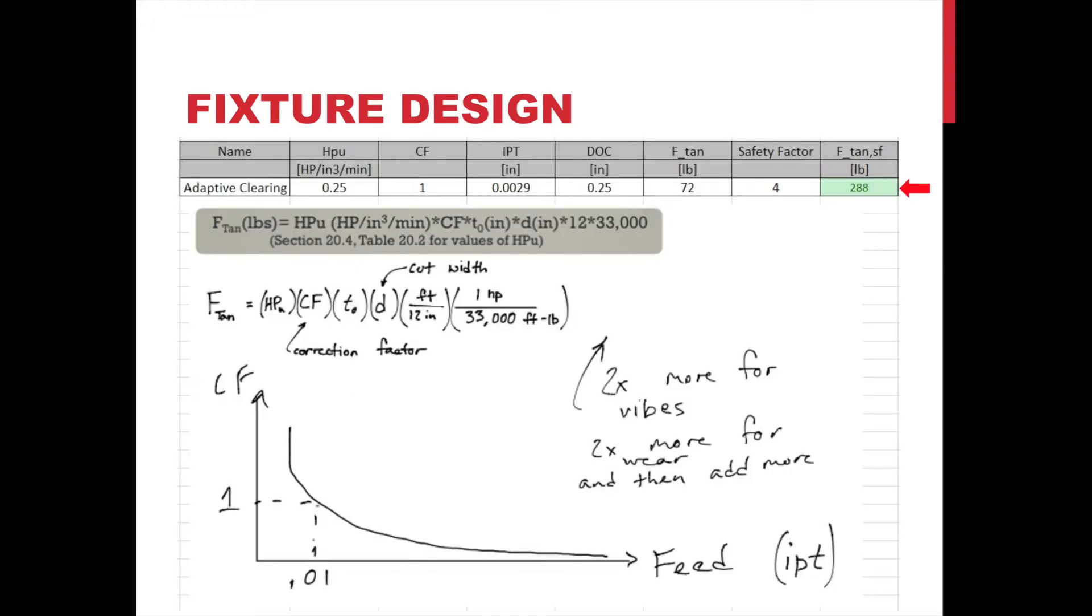Clamping forces for the fixture had to be able to withstand the tooling forces using a minimum factor of safety of two. In order to determine the number of clamps to use for each operation, the team calculated the maximum tooling force for both operations. For operation number one, the maximum tooling force occurred during the adaptive clearing step and the calculation can be seen below. The total tangential force per tooth came out to be 72 pounds and then we used a safety factor of 4 and came up with a total tangential force of 288 pounds. Seeing as the Mighty Byte clamps were rated at 800 pounds, we determined that we only needed one clamp for each operation.